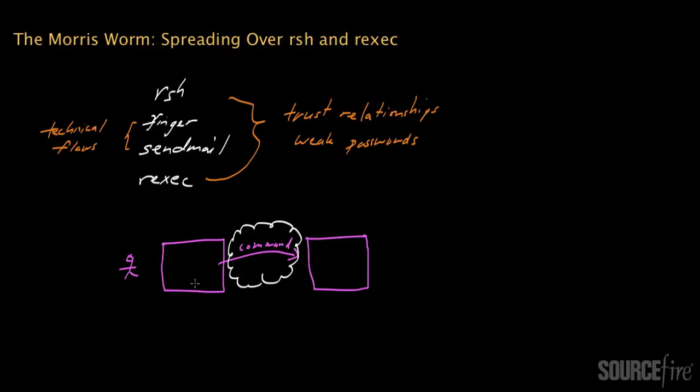Spreading over RSH was the first choice of propagation mechanism for the Morris worm, and I'll talk about how that works in more detail. It turns out that some systems on the internet have pre-established trust relationships with other systems on the internet, and you can find these relationships listed in very specific files.